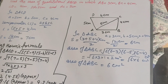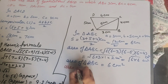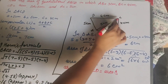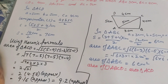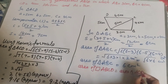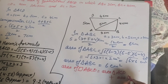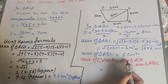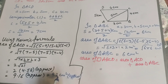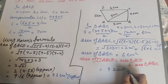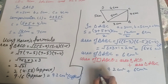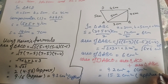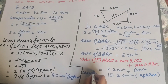Now we find the area of quadrilateral ABCD by adding the areas of both triangles: Area of ABCD = Area of triangle ACD + Area of triangle ABC = 9.2 cm² + 6 cm² = 15.2 cm² approximately. So the area of quadrilateral ABCD equals 15.2 cm².